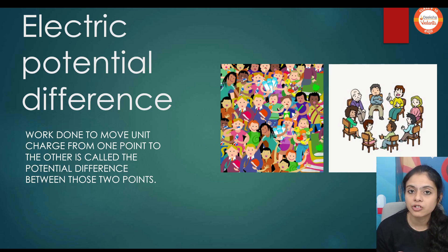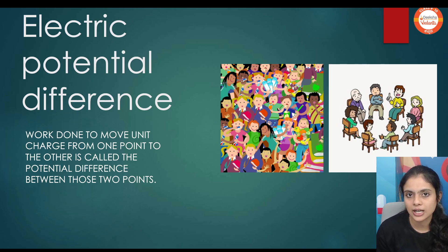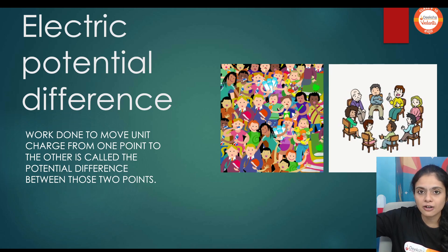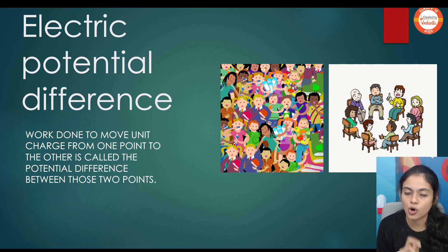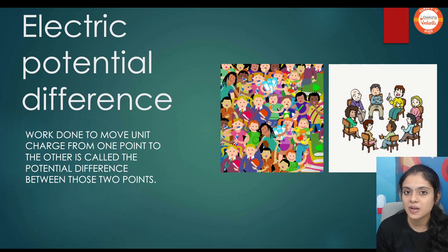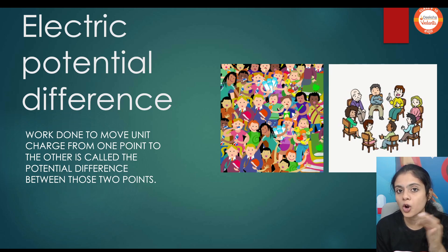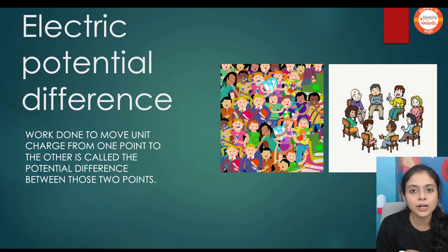Electric potential difference — but before that, what is electric potential? Electric potential is the work done to bring a unit positive charge from infinity to a point. What is electric potential difference? Here we are comparing two regions. It is the work done to move a unit positive charge from one point to another. So don't get confused between these two terms — infinity to a point is electric potential, and one point to another is potential difference.